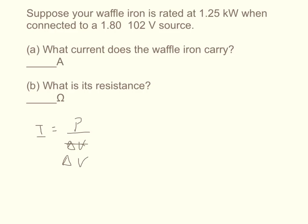Now the problem gives you the power in kilowatts and it gives you the potential difference in volts, so that's 10 squared, which is 180 volts. And this is 1.25 kilowatts, we're going to do 1.25 times 10 to the third watts.